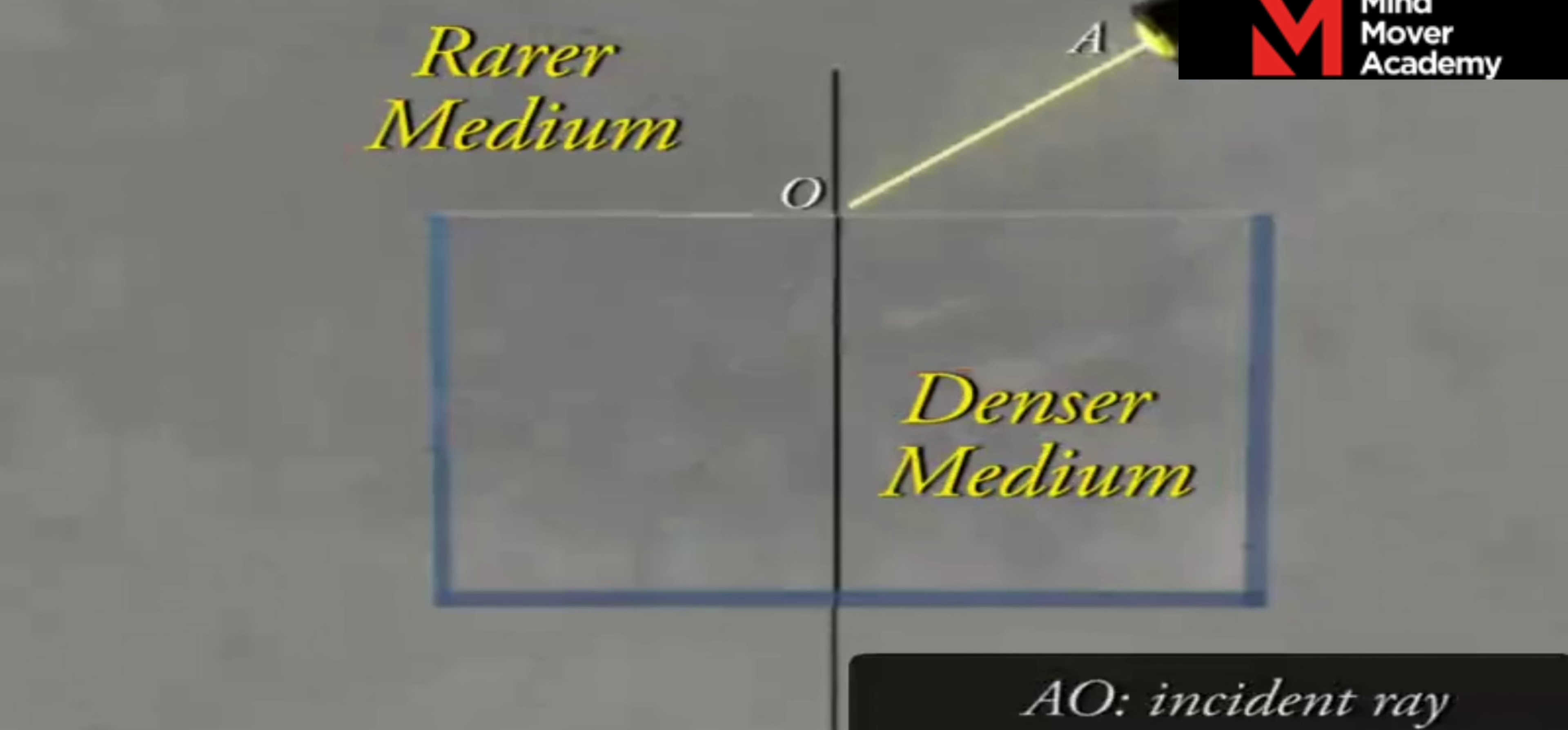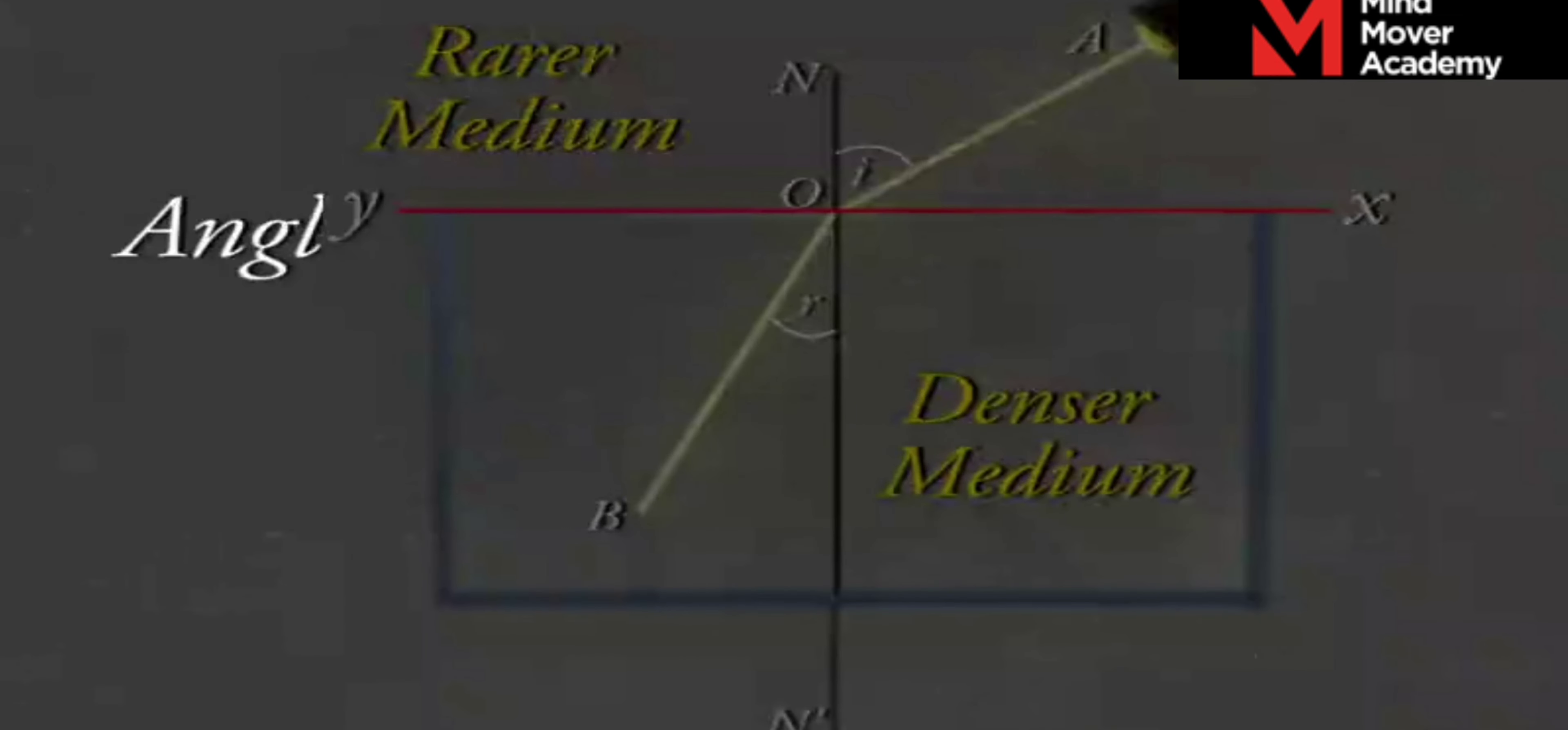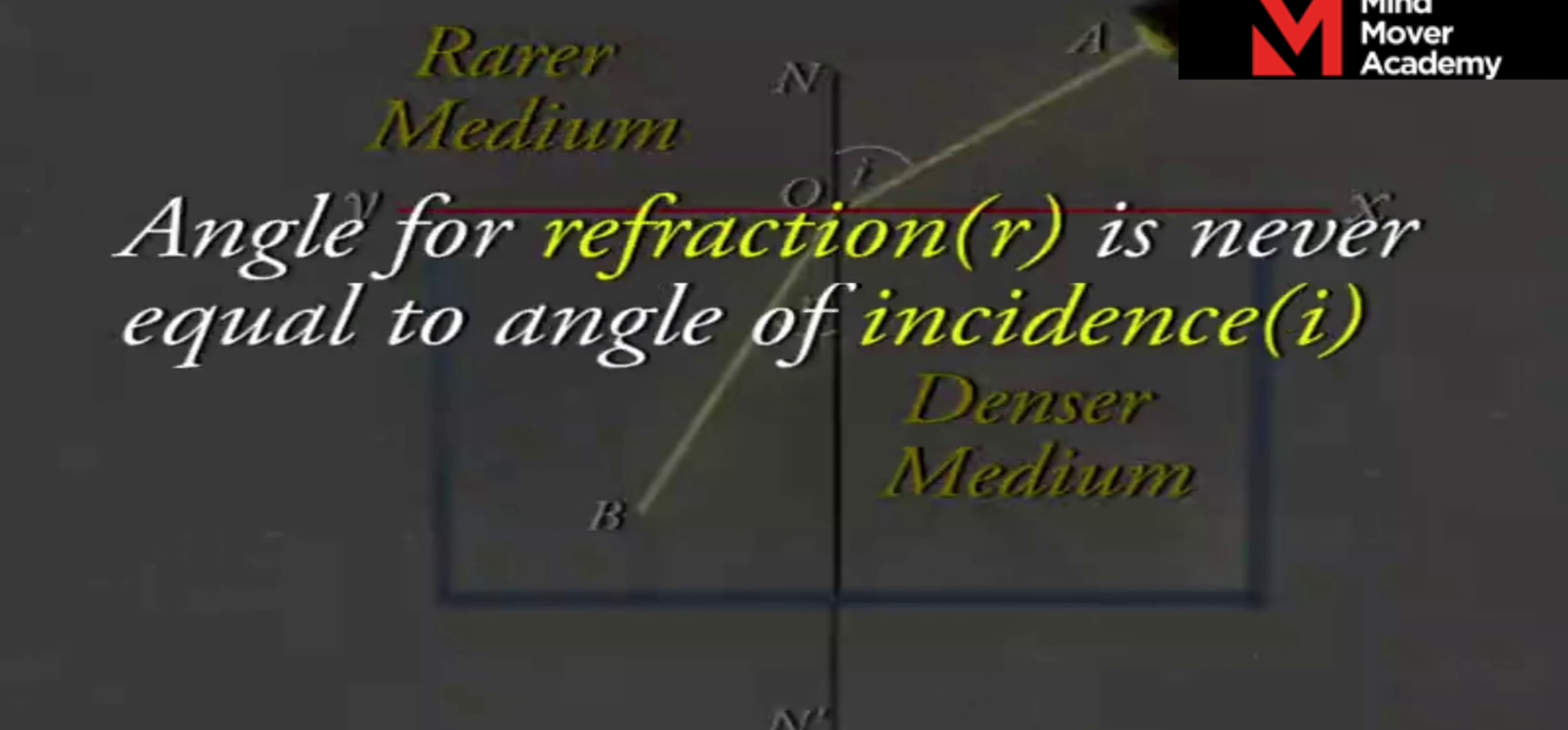AO is called the incident ray. OB is the refracted ray. NON' is called normal to the plane surface XY separating the two media. Angle of incidence is represented by i. Angle of refraction is represented by r. Angle of refraction r is never equal to angle of incidence i except for normal incidence.